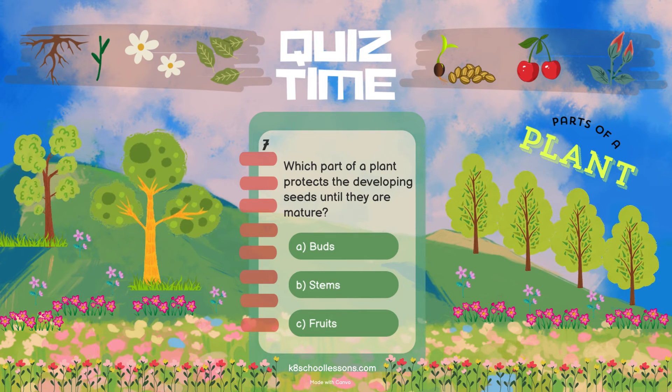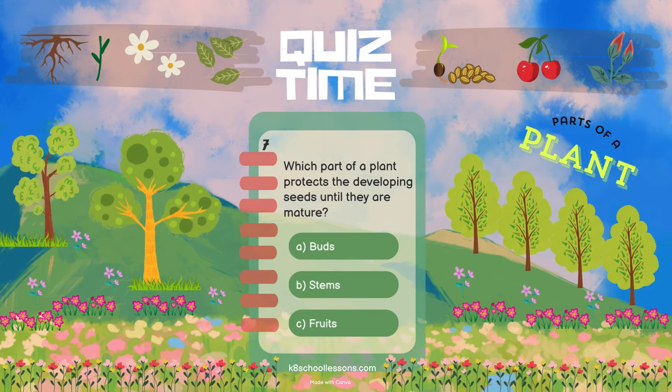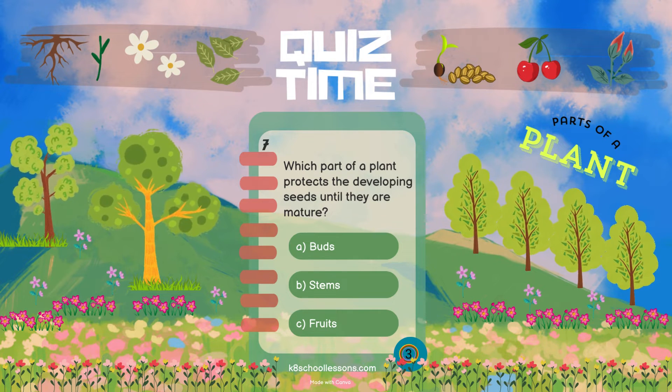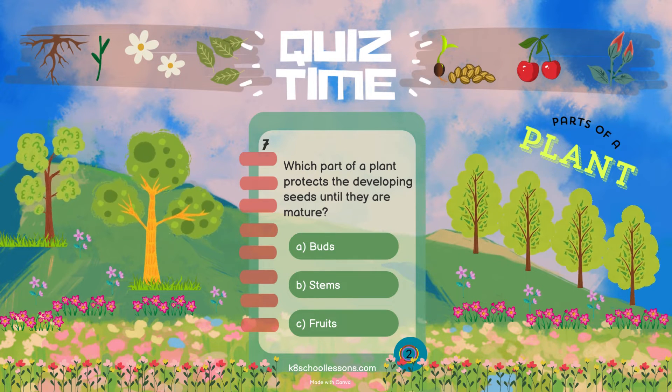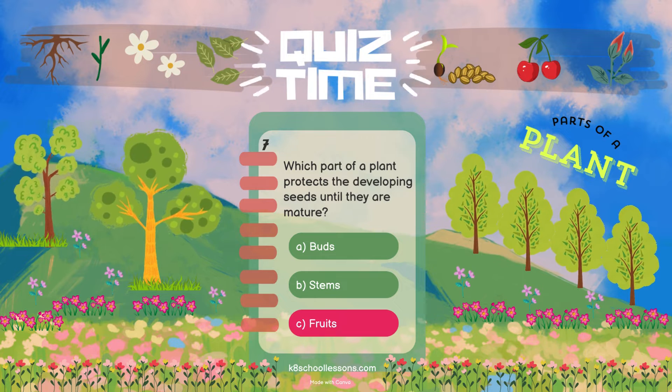Which part of a plant protects the developing seeds until they are mature? Fruits.